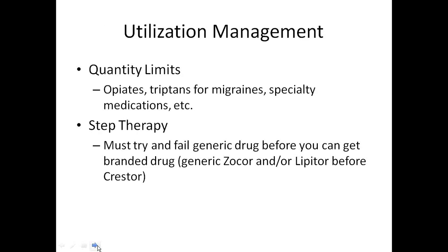We group these tools together under what we call utilization management. The first tool is quantity limits. Opiates are obviously the biggest use case, but we also use quantity limits for triptans and other acute migraine treatments. You don't want people using acute migraine treatment more than about nine times a month — beyond that, they're at risk for medication overuse headache and should really be on migraine prophylaxis. So it's definitely a patient safety concern as well.